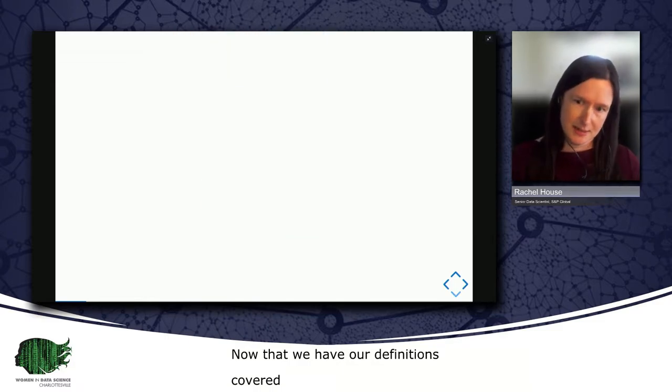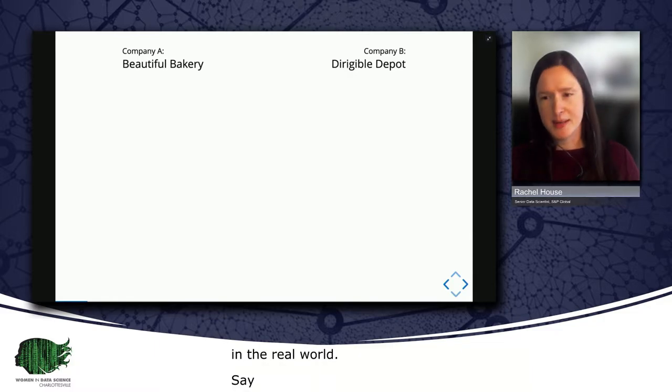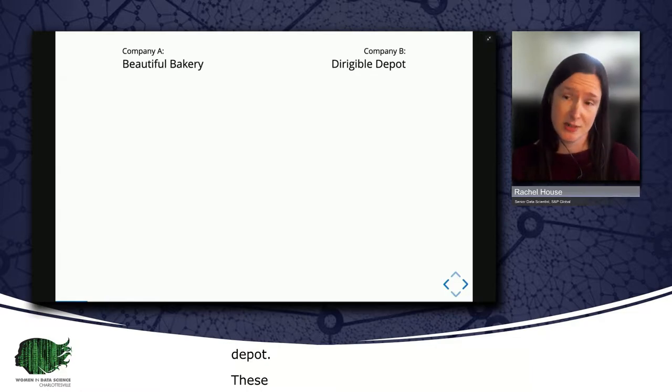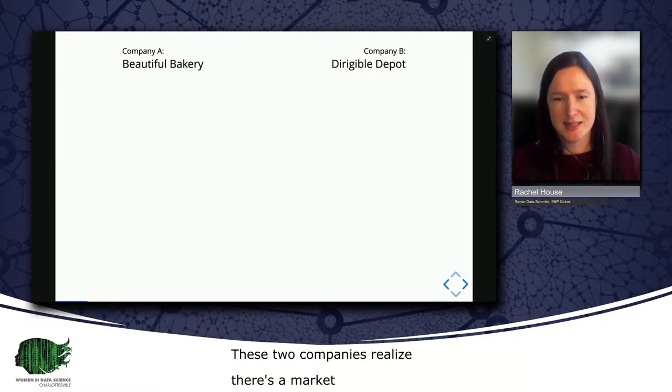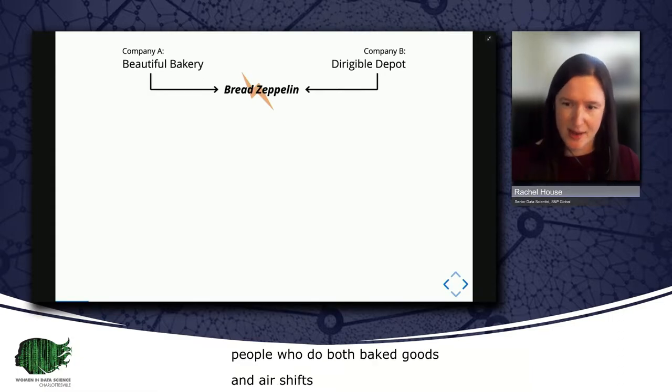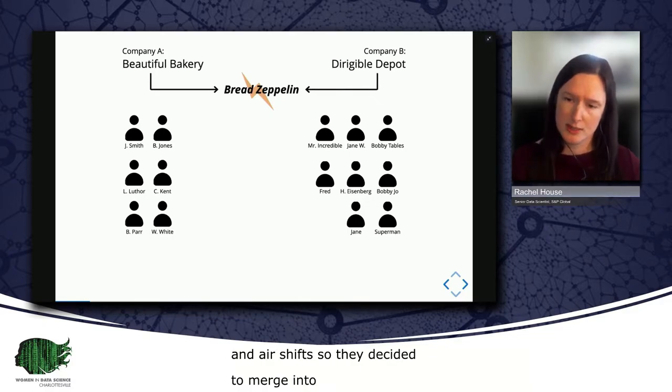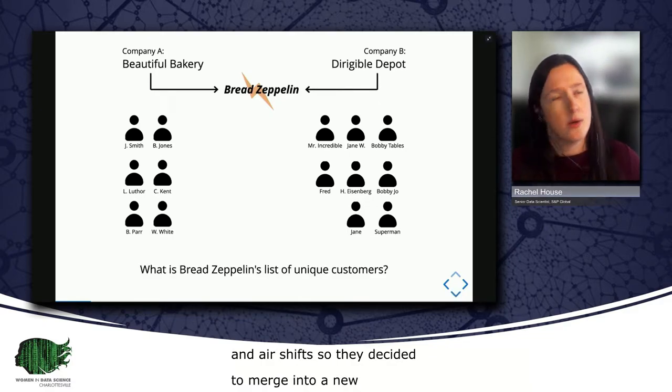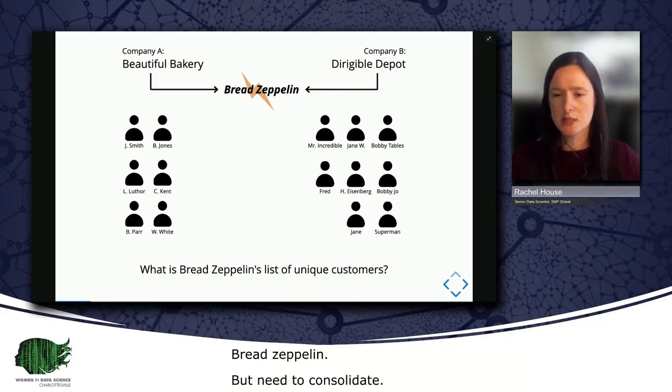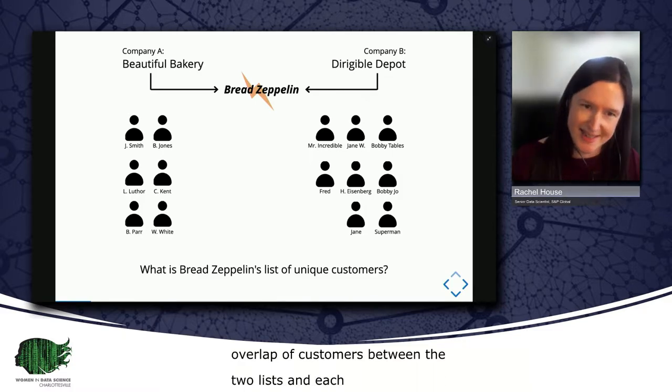Say, for instance, we have two companies, Beautiful Bakery and Dirigible Depot. These two companies realize that there's a market out there for people who dig both baked goods and airships. And so they decide to merge into a new company, Bread Zeppelin. However, Bread Zeppelin now needs to consolidate its formerly two customer lists into a single list. How can they do this, knowing that they likely have an overlap of customers between the two lists, and that each list stores customers' names and information in a separate format? The answer, as you might expect, is data linking.